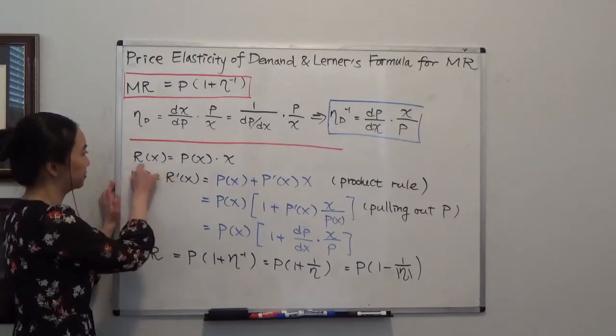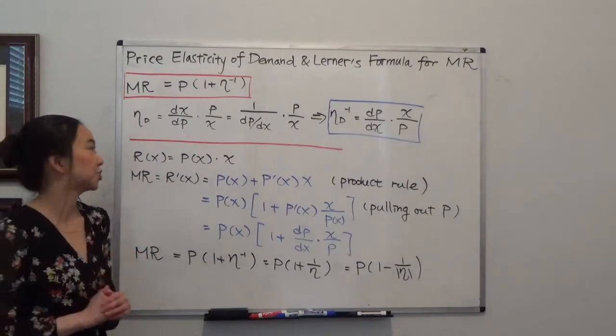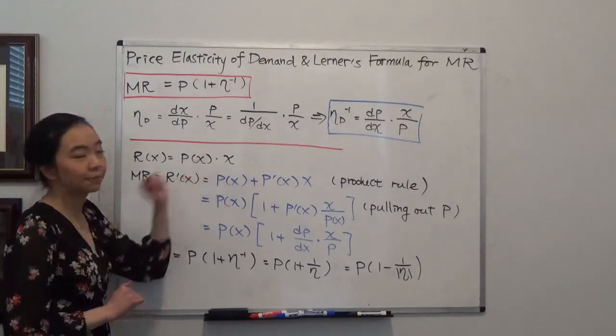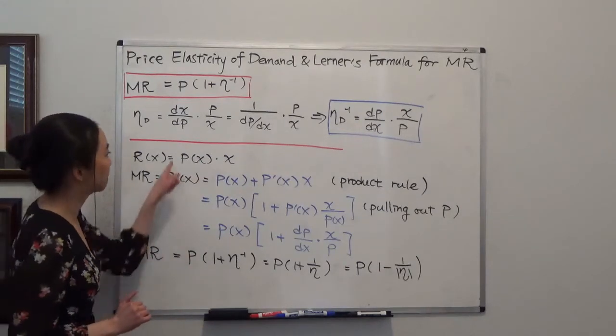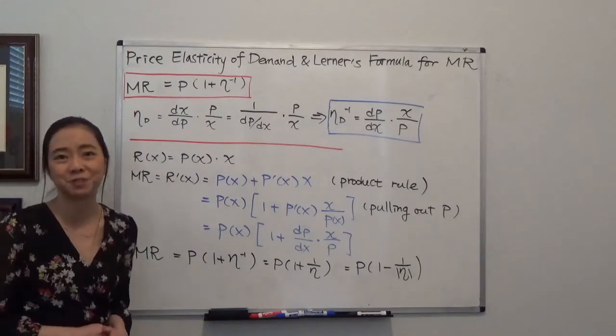So I have a revenue function. Revenue is just equal to price times quantity. And remember that my price is a function of quantity demanded.